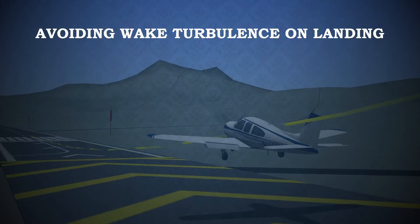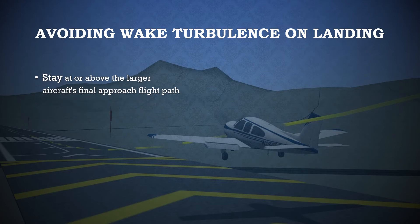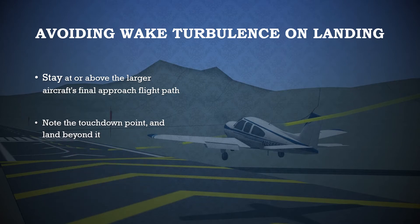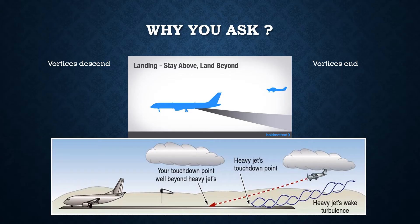Wake turbulence is most dangerous on takeoff and landing. According to the FAA, the key points to avoid this type of turbulence when following a larger aircraft on final approach for landing is to stay at or above the larger aircraft's flight path. The second point is to note where the larger plane touches down on the runway and land beyond that point. When an aircraft is flying, the wing tip vortices produced slowly descend behind the airplane, and when the aircraft touches down, the vortices end and slowly dissipate. By flying your airplane above their flight path and landing beyond their touchdown point, you're almost guaranteed to avoid a wake turbulence encounter.